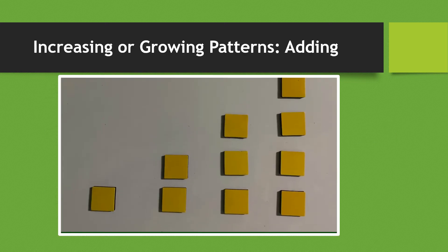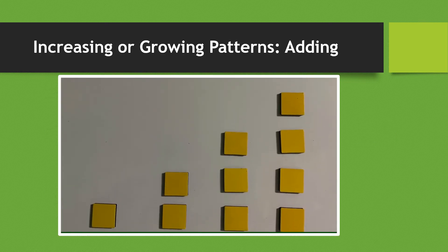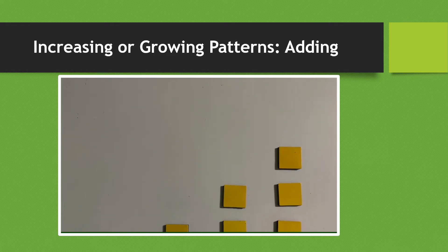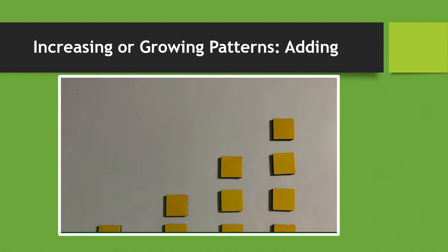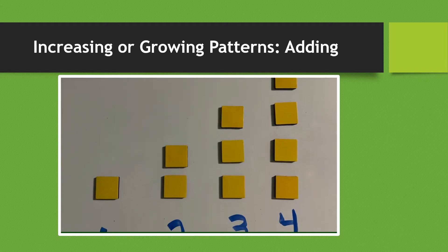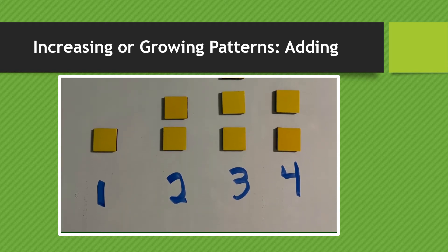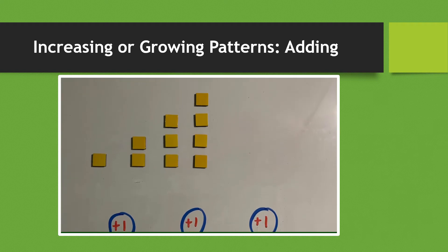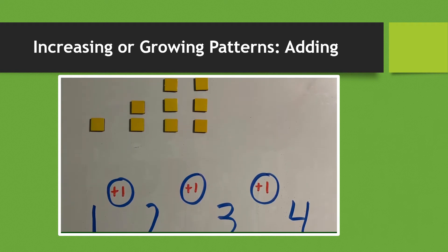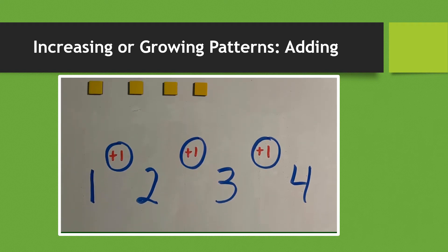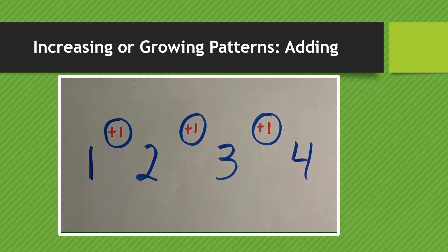The first pattern we're going to look at are these blocks. From the first column onward, the pattern is increasing by one block each time. So first we have one, then two, then three, then four. This gives a gap of plus one, because it's increasing by one each time.